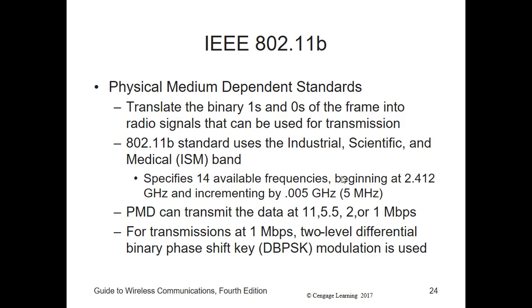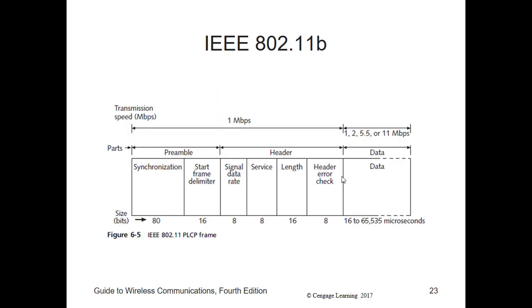The PLCP frame is made up of three parts: the preamble, the header, and the data. The preamble allows the receiving device to prepare for the rest of the frame. The header provides information about the frame itself. And the data is the information we're going to transmit, which is obviously going to be sent at the faster rate.